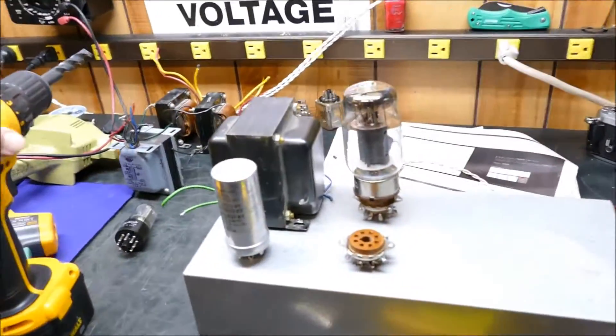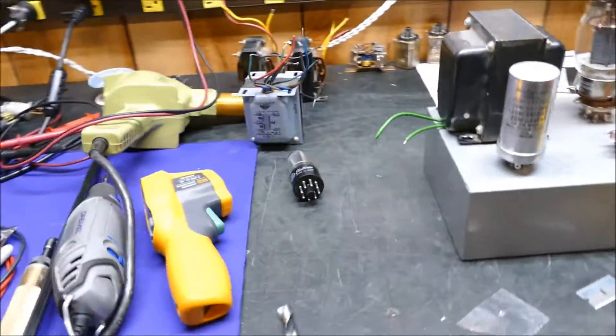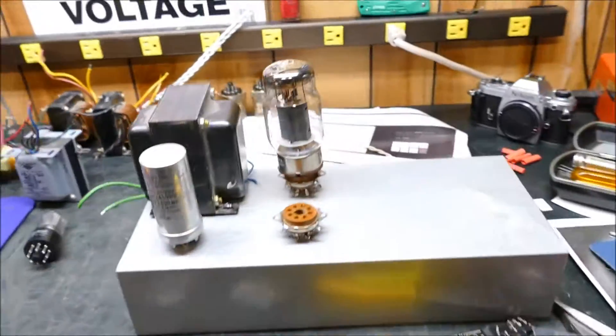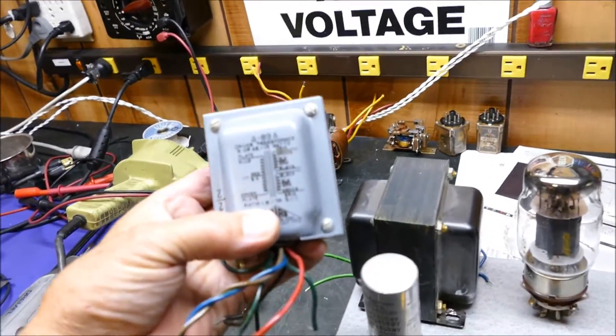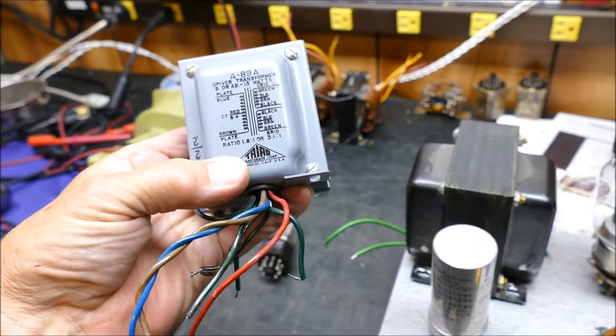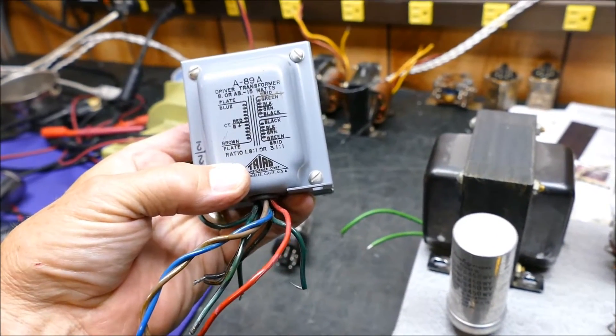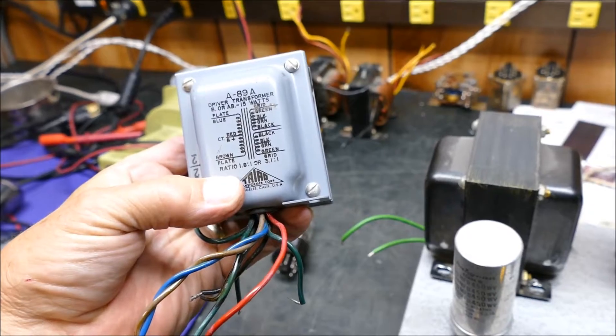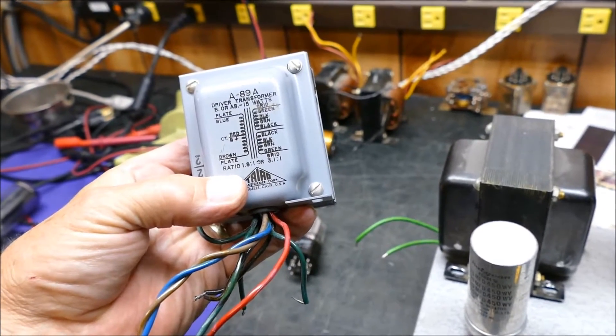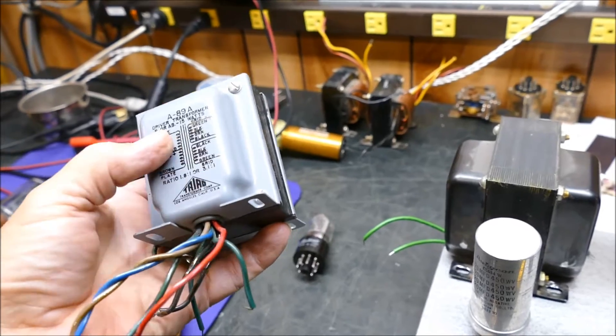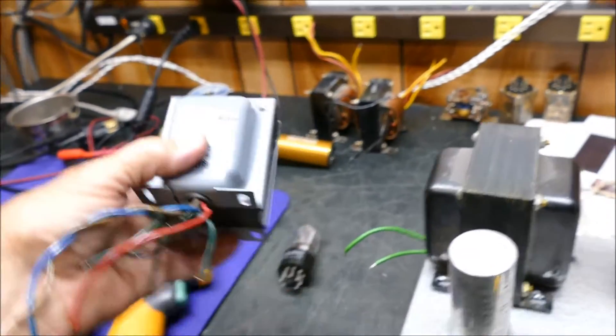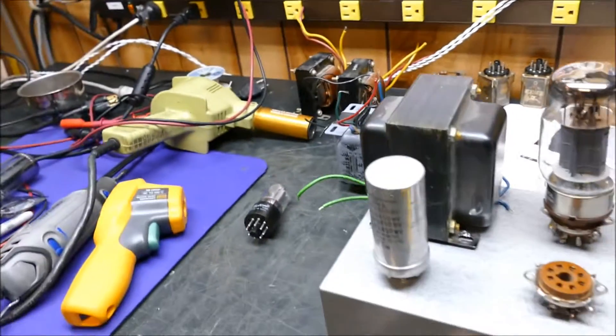Okay, with that power supply out of the way, the 833 amp is coming along. Place is quite a disaster—that's okay. Here's the driver transformer I'm going to use up there. Push-pull plates to push-pull grids, except I'll use half of it. I'll probably use all of it, we'll see.